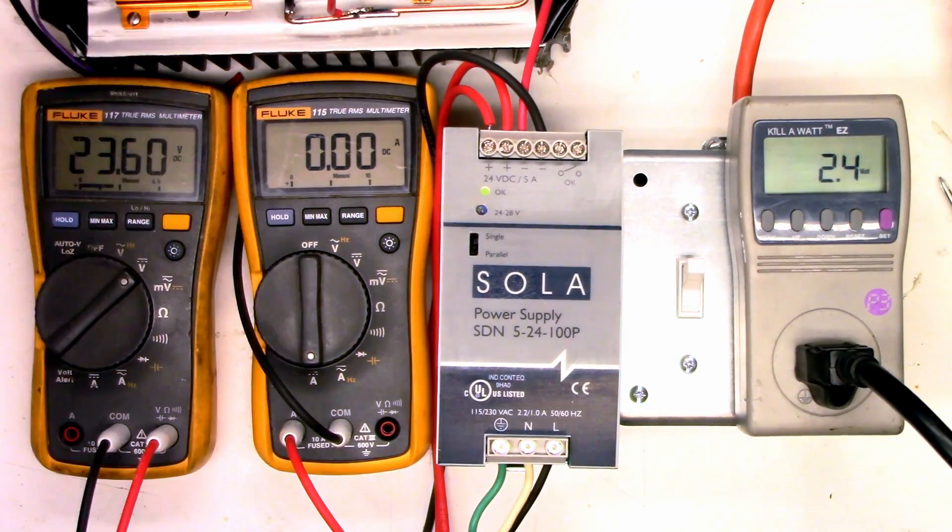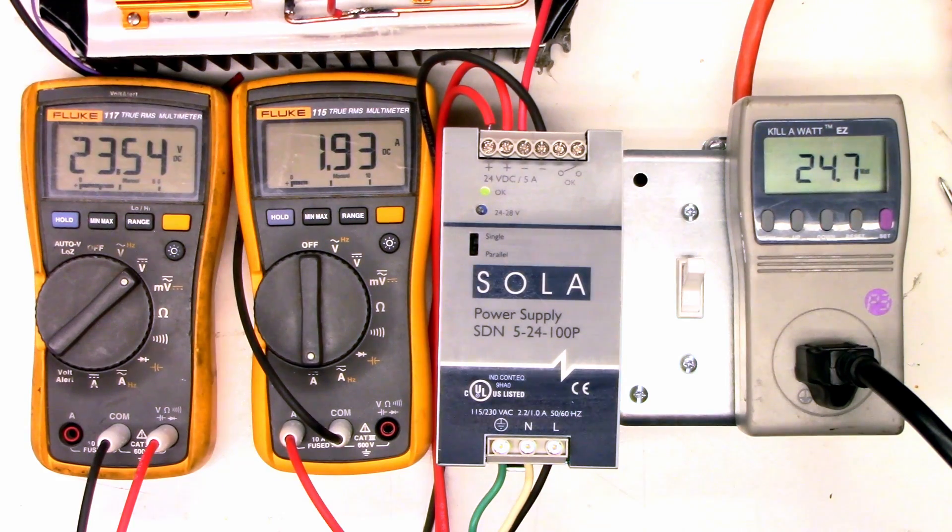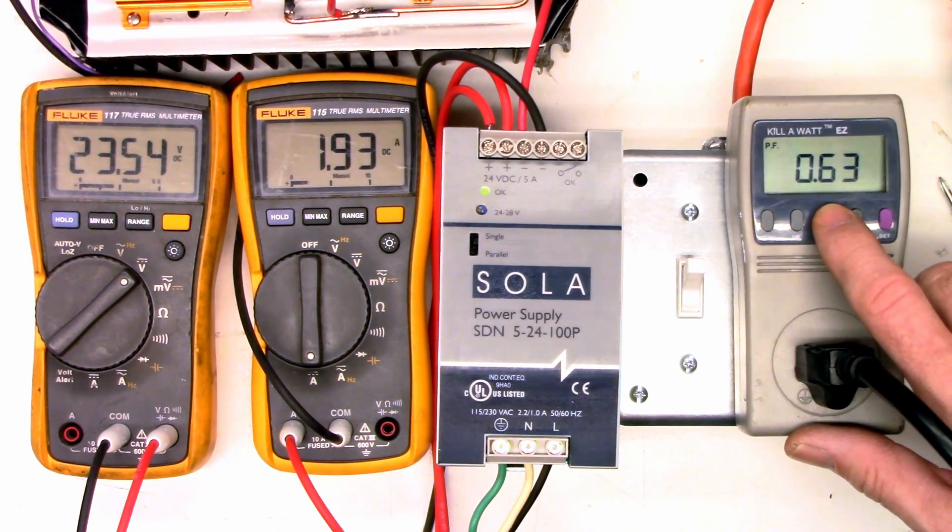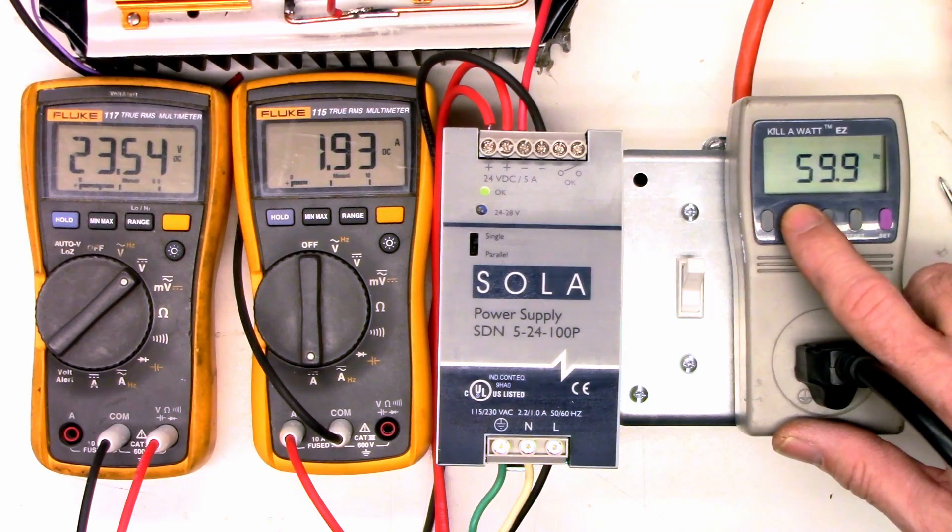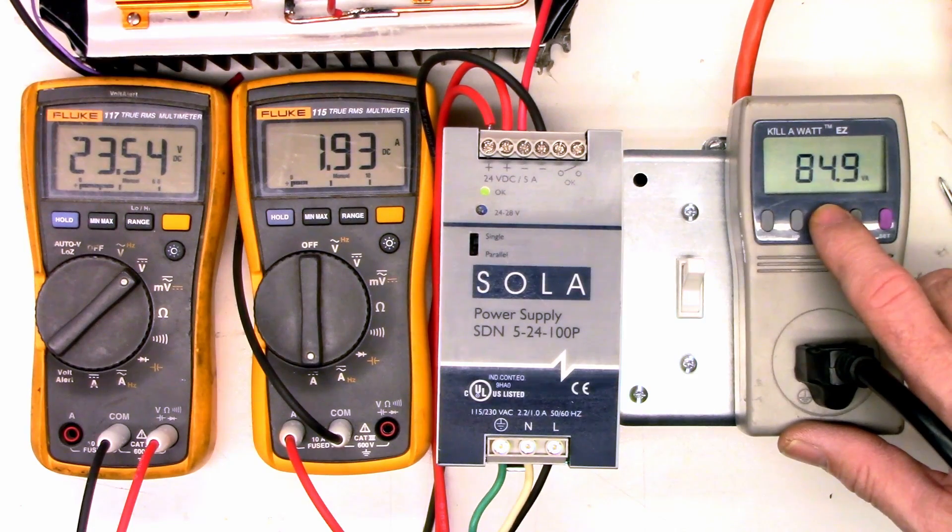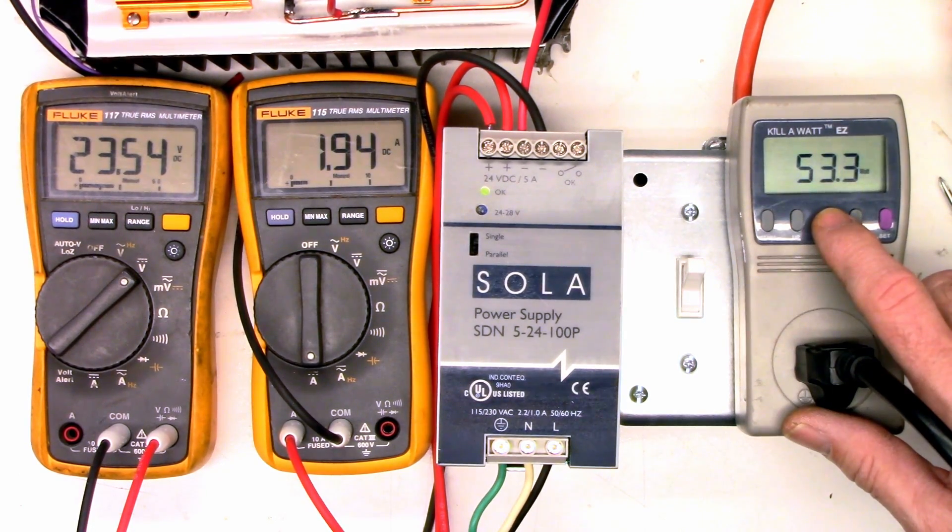Now let's turn on the first load. We have 1.9 amps, and the watts went up to 54 watts. Let's look at the power factor now. The power factor went up to 0.63, 0.64. But look at our VA now. It's only 84, and our watts is 53. That's pretty close now.